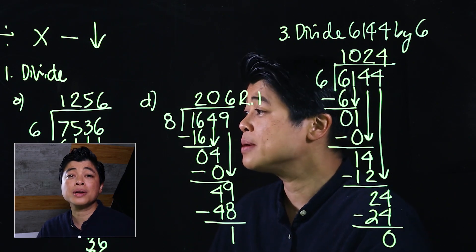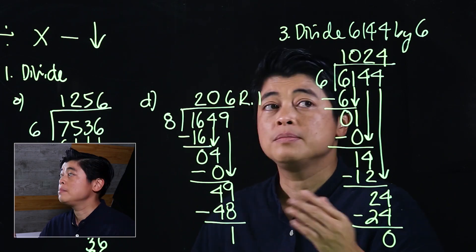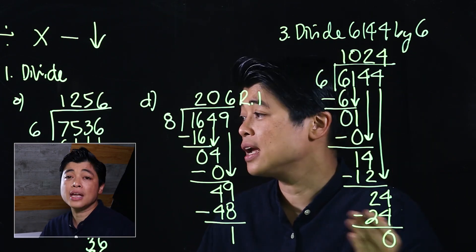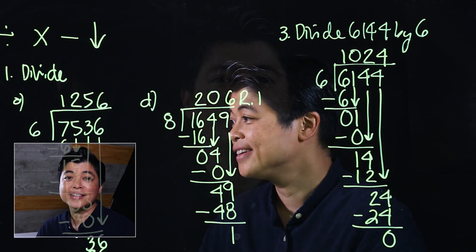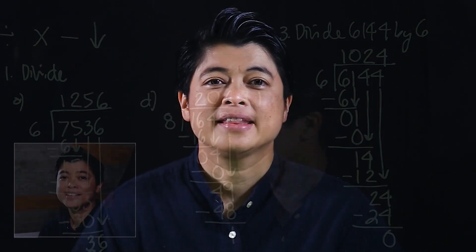In this case there's no remainder because there's nothing else to bring down. That concludes Lesson 3 of Chapter 3, which also concludes our chapter and our first module. See you in the next module.